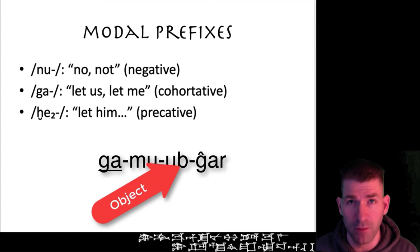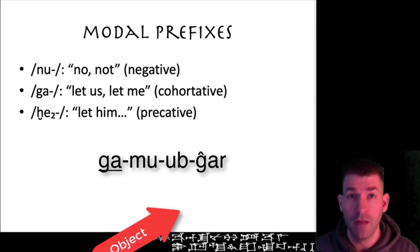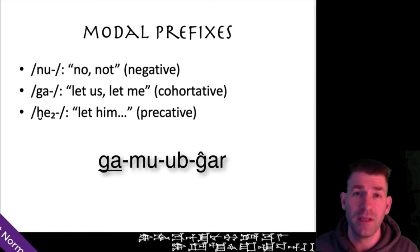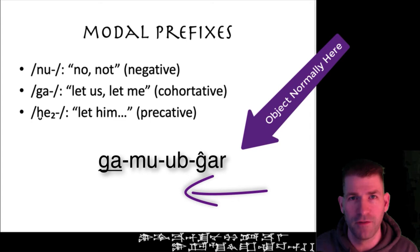However, if you see the form ga-mu-gar, the b before the verbal base is not marking the subject of the verb—it's marking the direct object. Think about it like this: the ga tells you that it is a first-person subject, so you don't need another marker. Because a ga has been placed at the front of the verb, it is pulling the marker of the direct object from being at the end of the verbal chain to the position before the verb.